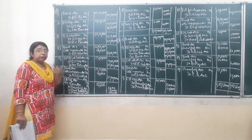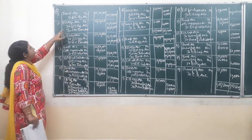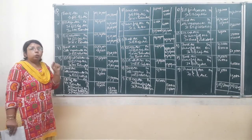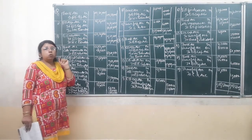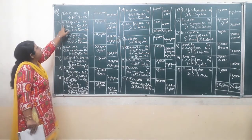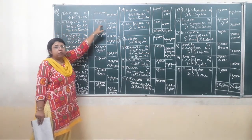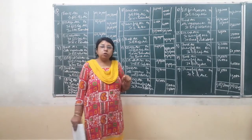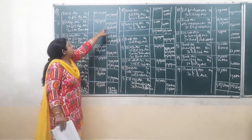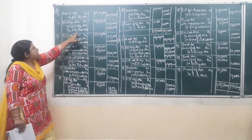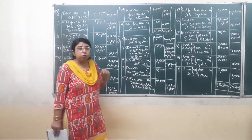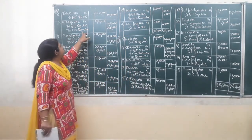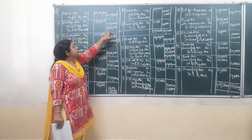Then the share application money is transferred to share capital account. Since application money is received including premium, you have to credit the amount to securities premium account. So the second journal entry: equity share application account is debited by the same amount to equity share capital account credited, that is 2,04,000 shares multiplied by Rs. 3 per share, which comes to Rs. 7,02,000. Securities premium account is credited for 2,04,000 shares multiplied by Rs. 35 per share, giving Rs. 84 lakhs.